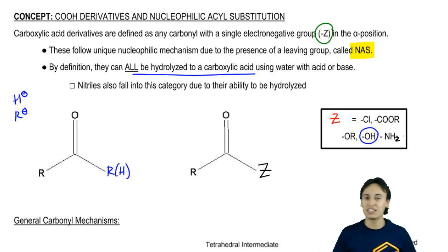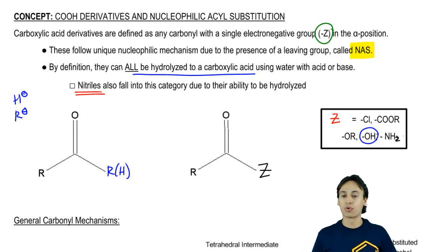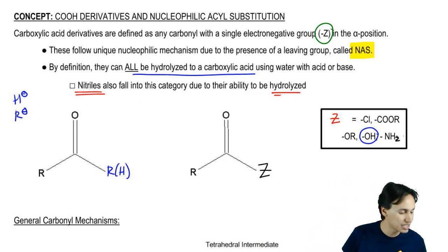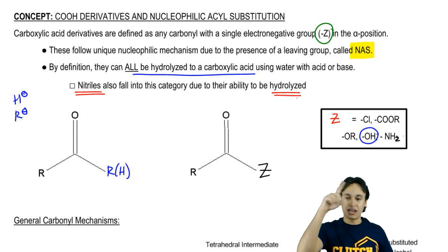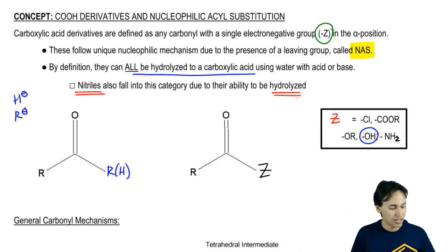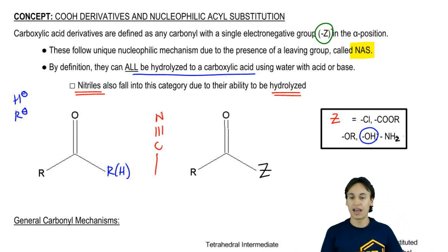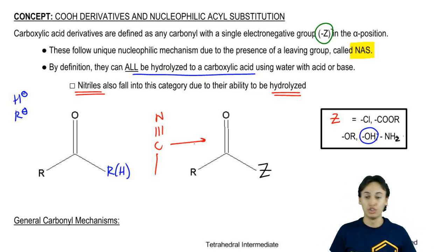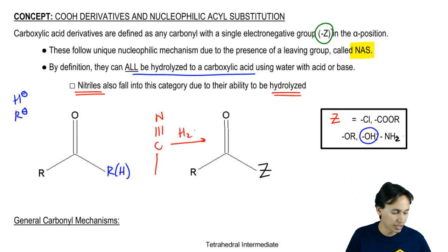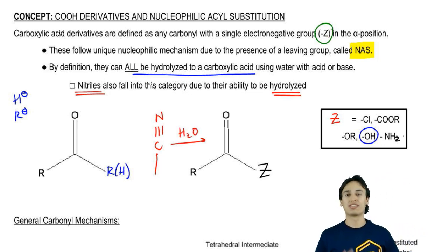Another really strange little fact here is that nitriles also fall into this category due to their ability to be hydrolyzed. We're going to see later, guys. Notice that I don't have nitrile on my list, but nitriles look like this. I'm looking for a place to write it, carbon, nitrogen like that. It turns out that they can be hydrolyzed using basically water and acid or base to carboxylic acid. We consider nitriles to also be carboxylic acid derivatives.